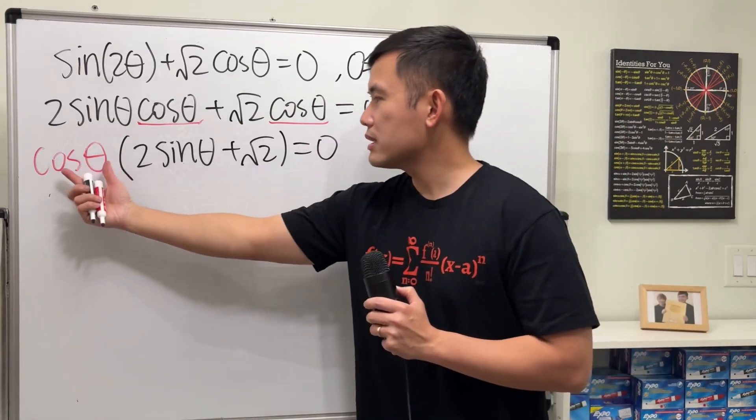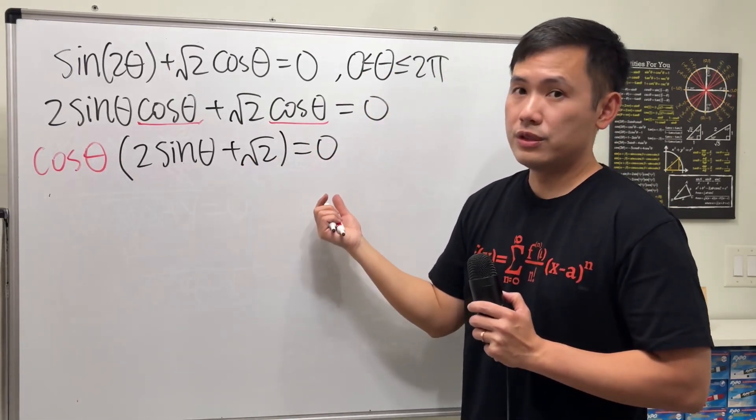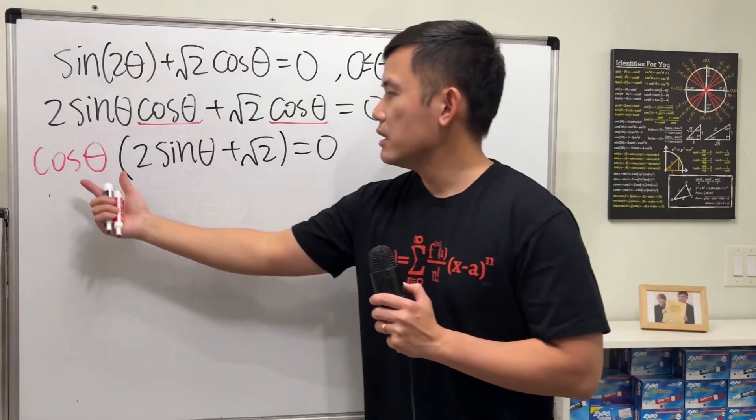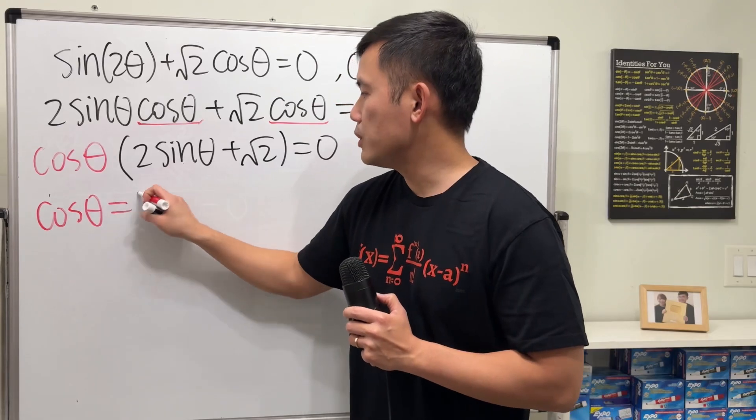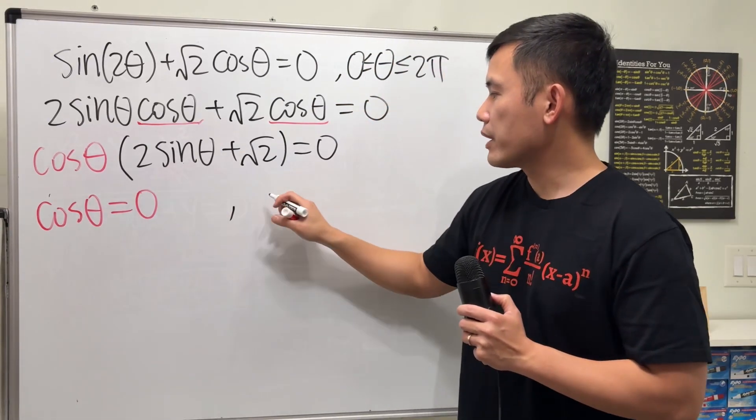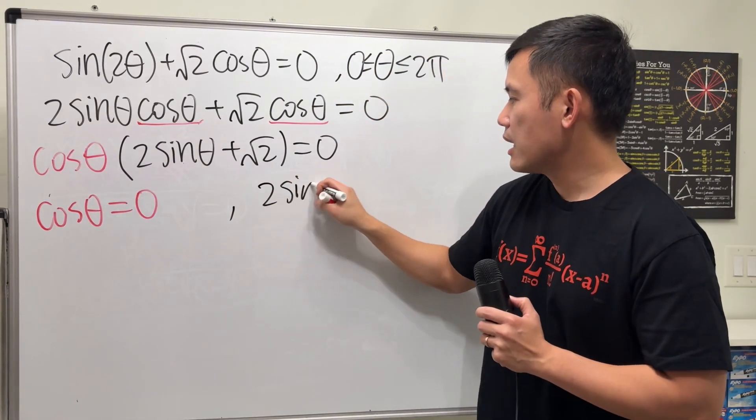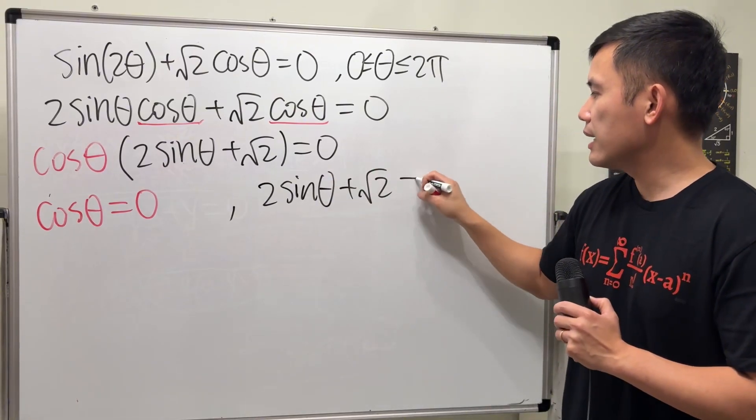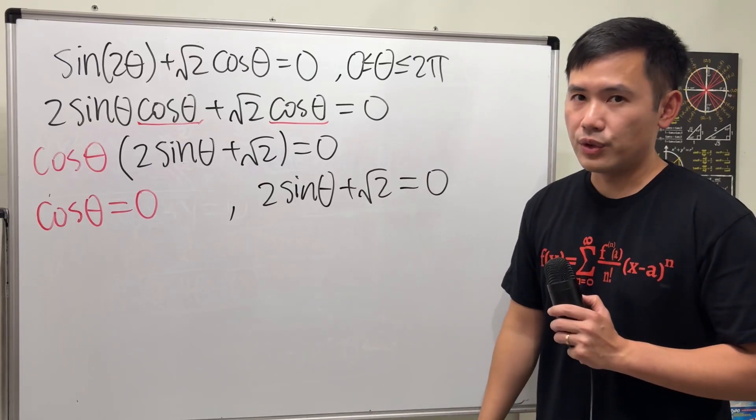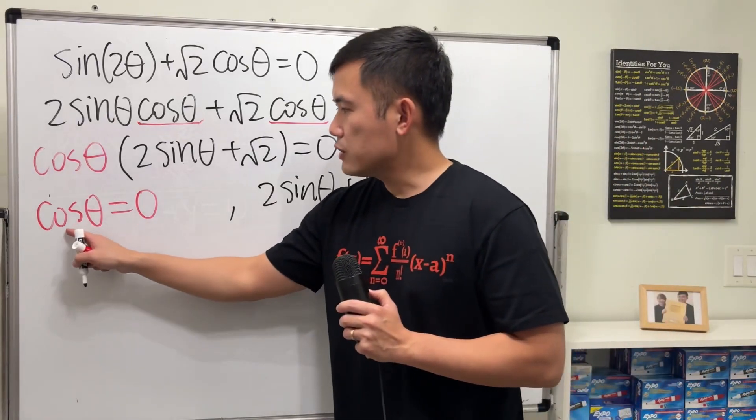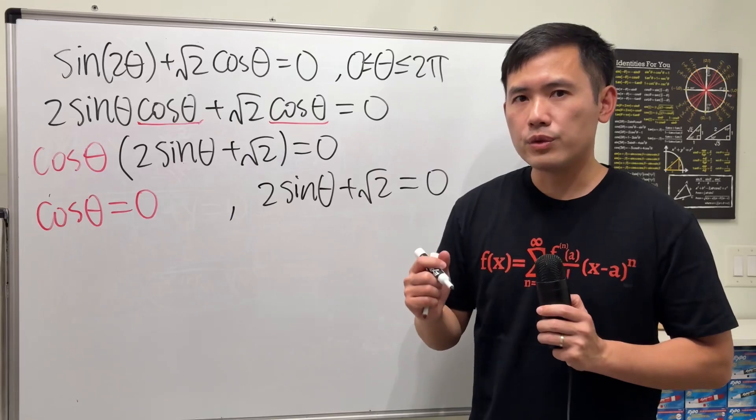Now we have a product of two things that's equal to 0. So that means the first factor which is just cosine theta has to be equal to 0 or this right here, 2 sine theta plus square root of 2 has to be equal to 0. And now we just have to solve them individually. For the first one, cosine theta is equal to 0.